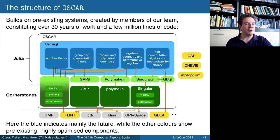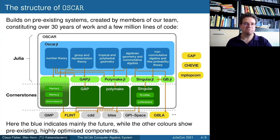The structure of OSCAR. OSCAR is not just new code — in fact it builds on pre-existing systems which were created by members of our team, and they constitute work done over 30 years and a couple million lines of code. This diagram is supposed to give a rough idea about the structure of how these things fit together. At the very bottom you see some gray and yellow boxes — these are mostly C and C++ software. The yellow ones are at least in part written by people in our team.